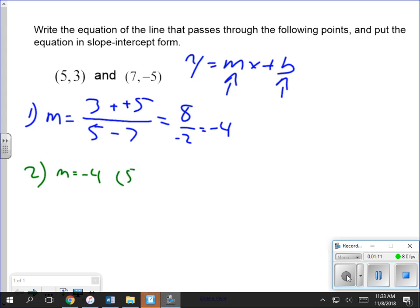So if I use the point (5, 3), it's easier because it doesn't have any negatives. I plug those into y equals mx plus b and solve for b.